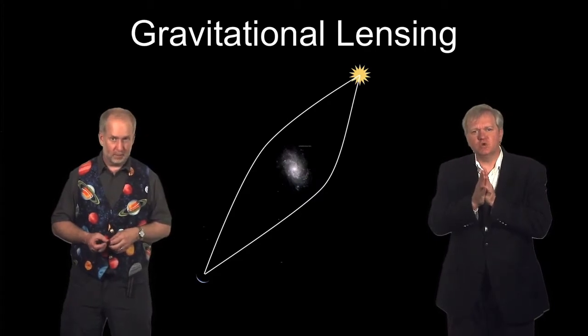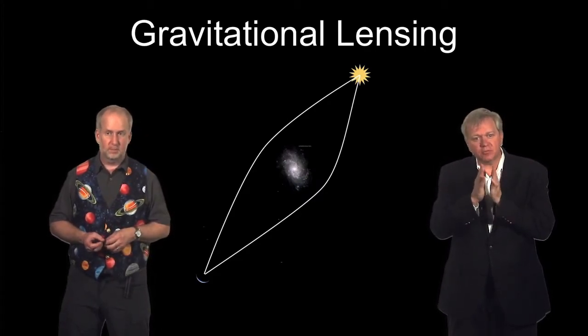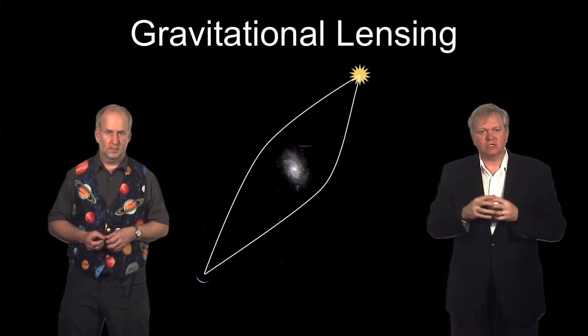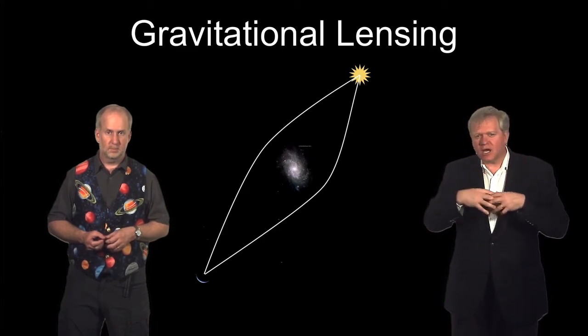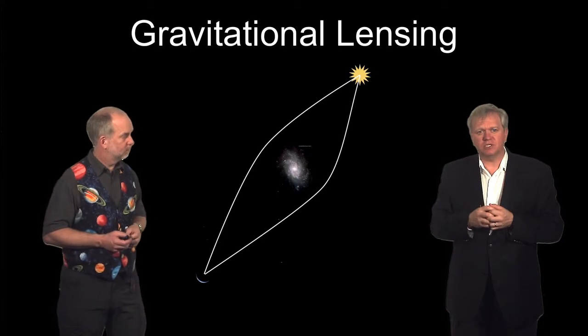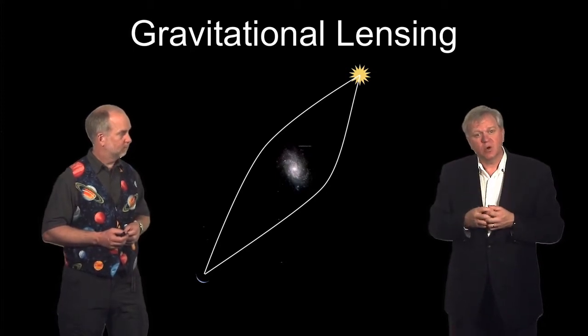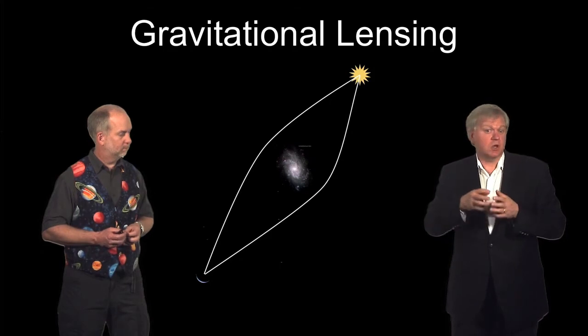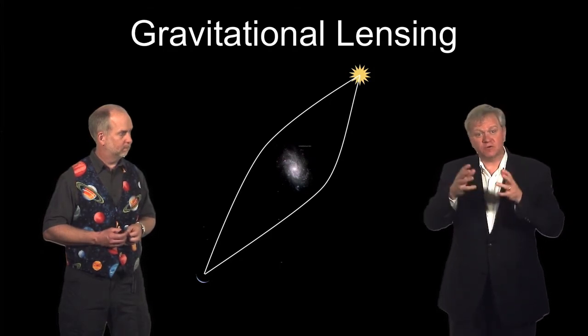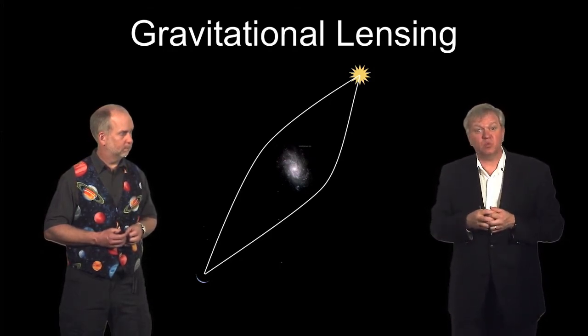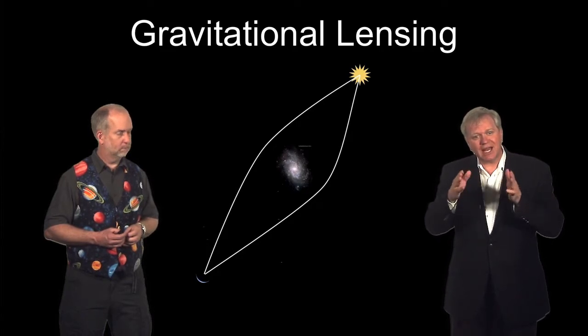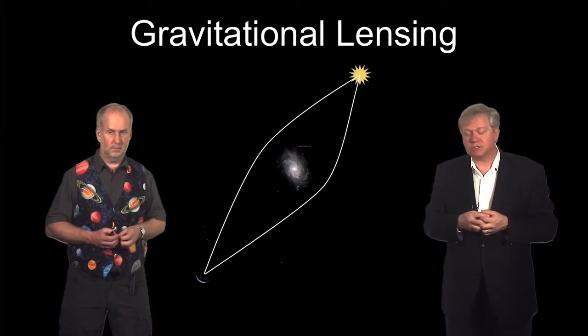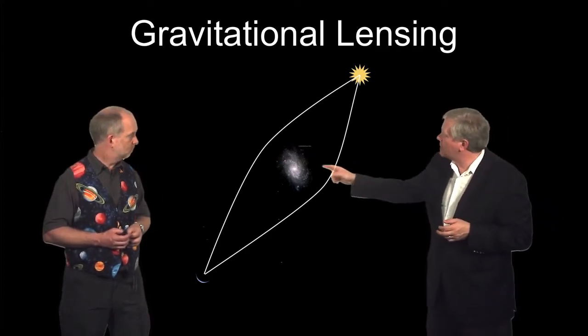So let's use something that Einstein predicts for massive things in the universe, which is gravitational lensing. When Einstein proposed his theory of general relativity, one of the things it predicted was that space would be bent by gravity. This is the way that Eddington first showed that general relativity seemed to be realized in nature, by looking at how the sun bent the light of background stars during an eclipse.